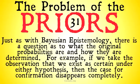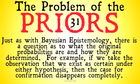The problem of the priors: just as with Bayesian epistemology, there's a question as to what the original probabilities are and how they are determined. For example, if we take the observation that we exist as certain — as a fatalist might do — under either hypothesis, then the case for confirmation disappears completely. If it is certain that we exist and there's no chance that we don't, then there's absolutely no reason for our existence to be more likely under one hypothesis than the other. You can take this as saying there's no point going back in time to think about what would be more likely, or take the fatalist conception that there is no other way for the universe to be. As we've noted before, the cosmic fine-tuning argument is no problem to the fatalist.